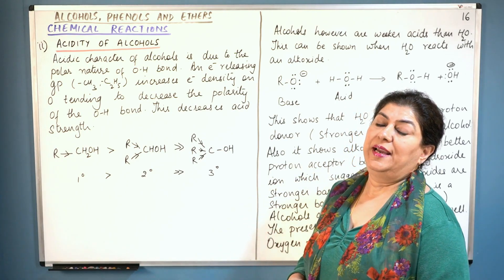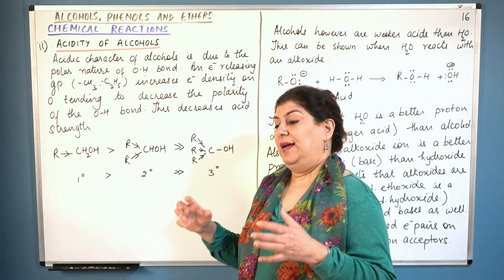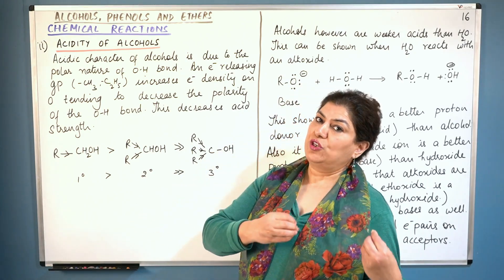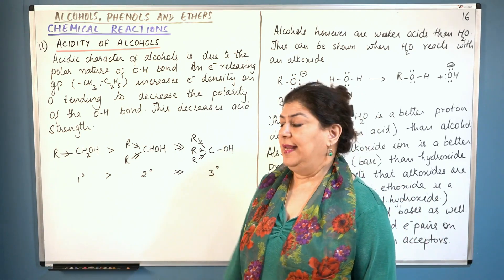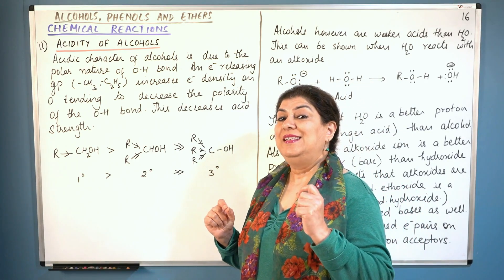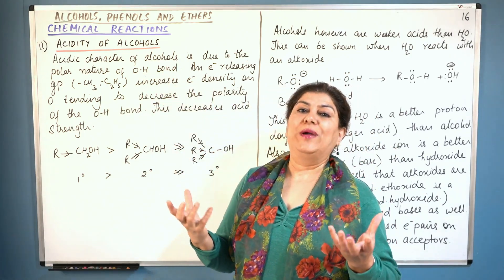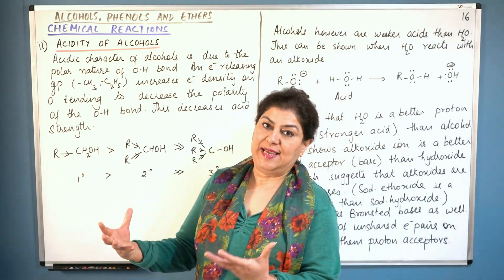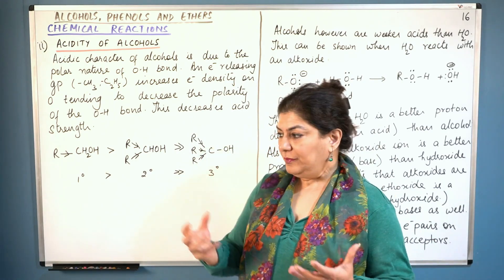When alcohols react with a base like sodium hydroxide, they result in the formation of a salt and water, which shows that alcohols are acidic in nature. The acidic nature depends on the OH bond — it is basically because of the OH bond. Unless and until hydrogen can be released as H⁺, a substance cannot act as an acid.